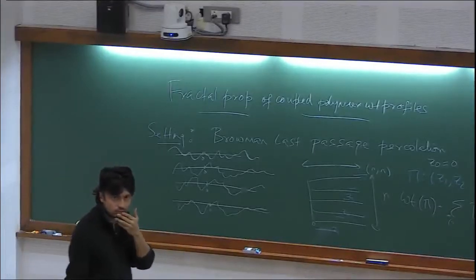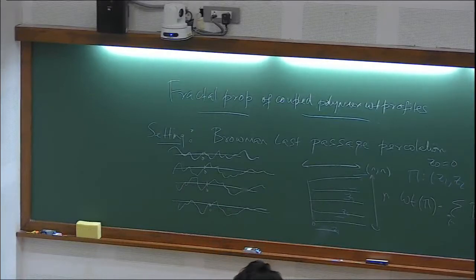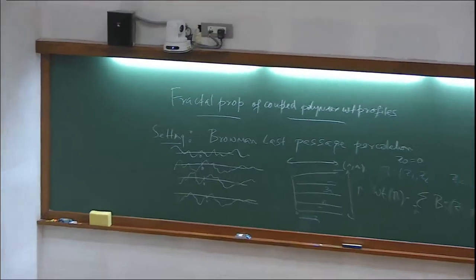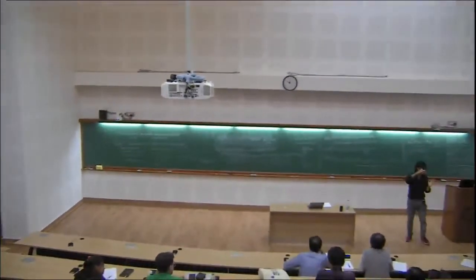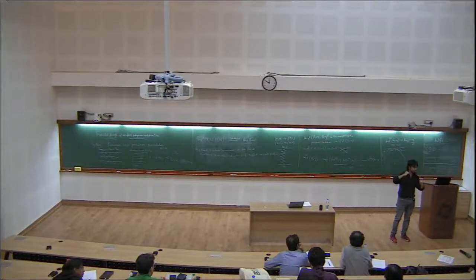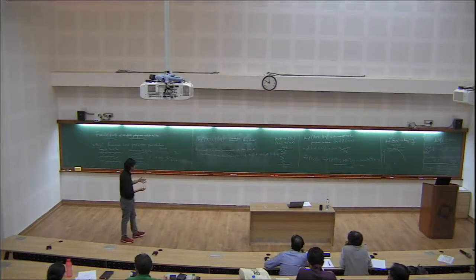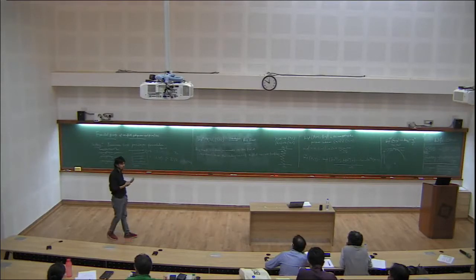For the Airy sheet, there are some determinantal formulas for finite-dimensional distributions. Certainly the one-point marginal, which is the Airy process, is well understood. The Airy sheet itself has some formulas, but proving its existence is very hard, and there has only been some recent progress. You should think of the system size as N, look at S and T as order-one numbers, and then look at heights which are Ns and Nt. There is a question of whether this has a scaling limit, but you can also look at the pre-limiting four-parameter field and understand its covariance structure.